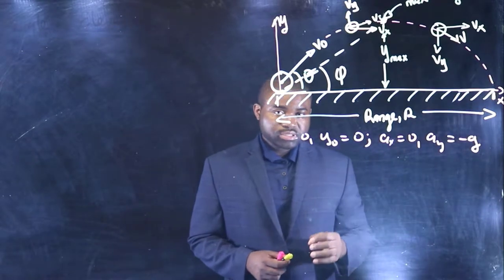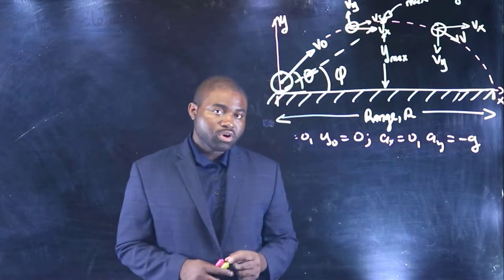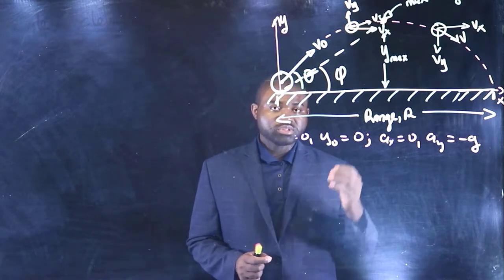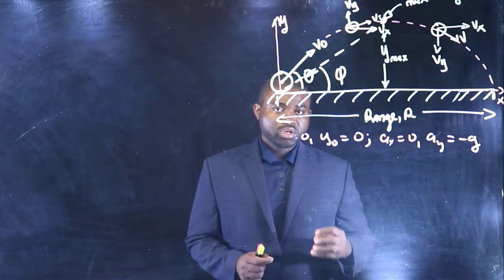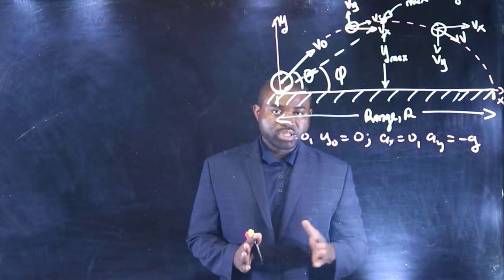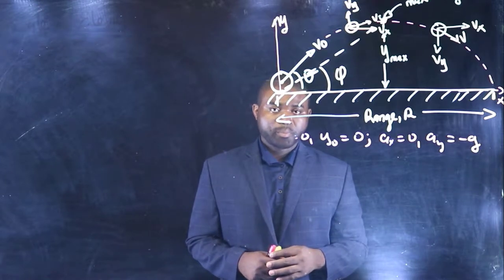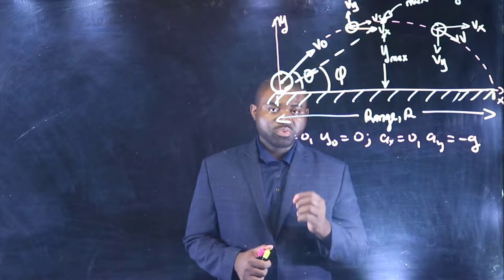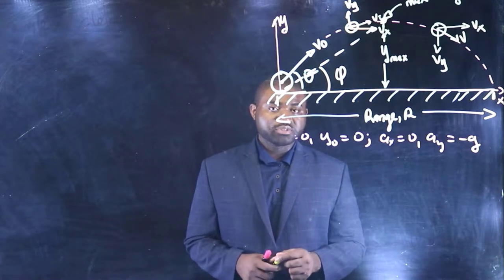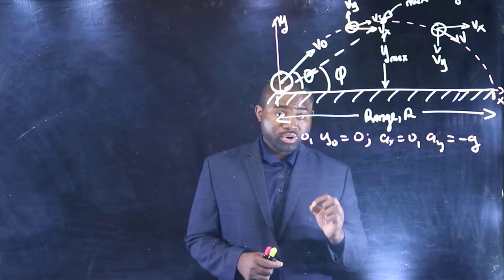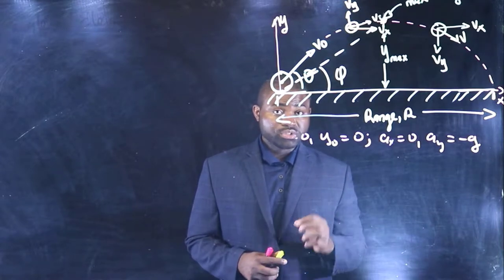The best definition of horizontal range is the maximum horizontal distance traveled by a projectile before it hits the ground. Let me say that again: it is the maximum horizontal distance traveled by a projectile before it hits the ground. The key word is horizontal.